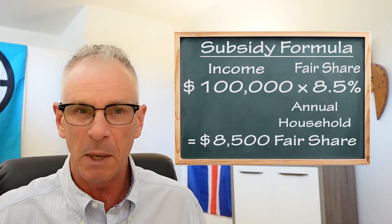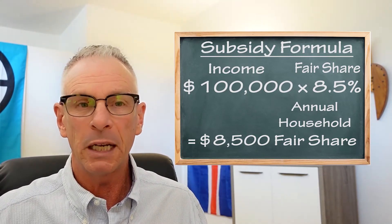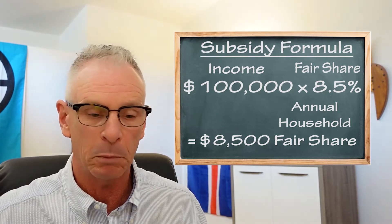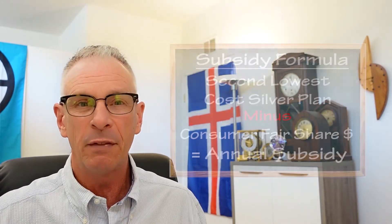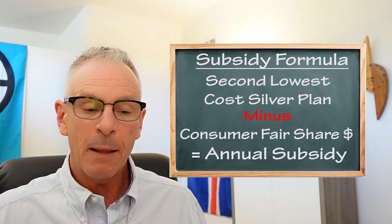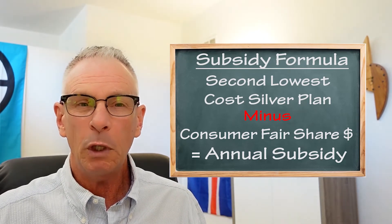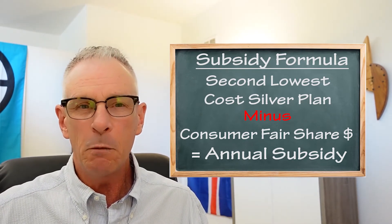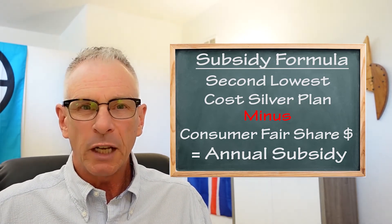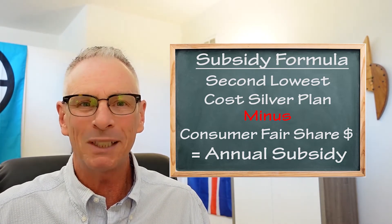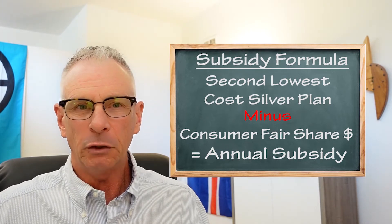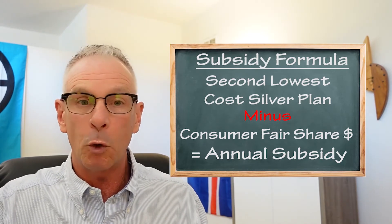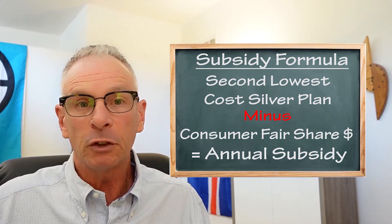It doesn't really make a difference how many people are in the household — the fair share is that the household should be spending no more than $8,500 for the second lowest cost silver plan, that benchmark plan. So the next step is looking at the annual amount of the second lowest cost silver plan. This is where the exchanges — healthcare.gov and Covered California — are really important, because health insurance and how they come up with a second lowest cost silver plan is zip code specific. Not all carriers offer all the plans in all counties or zip codes.